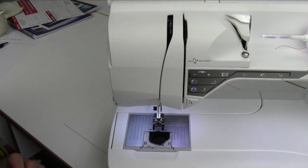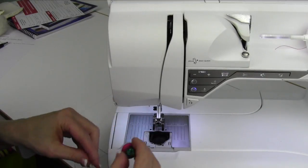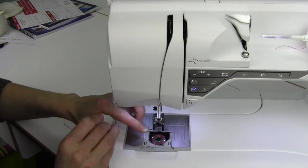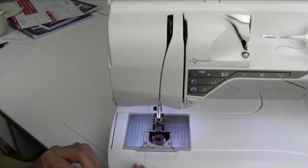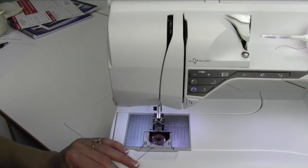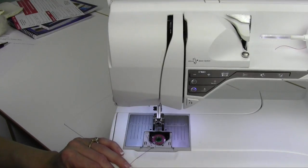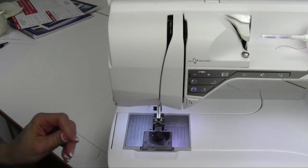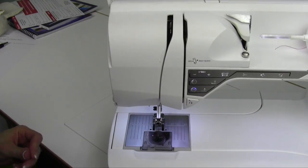So re-thread the machine, put your bobbin back in, put that new needle in if you didn't already, and then test out your machine. Make sure it is good to go. So once again, you want to do this about every two to three bobbins, because it doesn't take much for things to get a lot of lint, and then also too, once a year, take it into your Husqvarna Viking dealer for its annual cleaning.